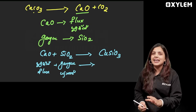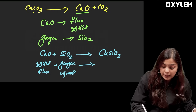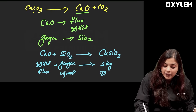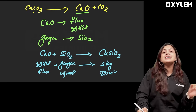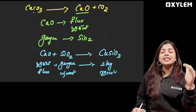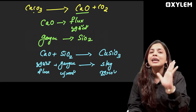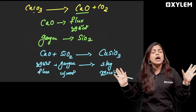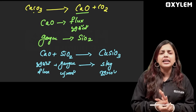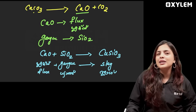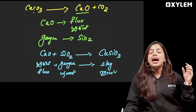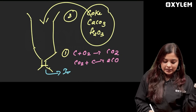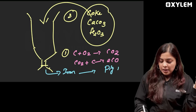The calcium oxide reacts with silica to form calcium silicate, which is removed as slag. The remaining impurities amount to about 4%. The iron collected from the blast furnace is called pig iron.